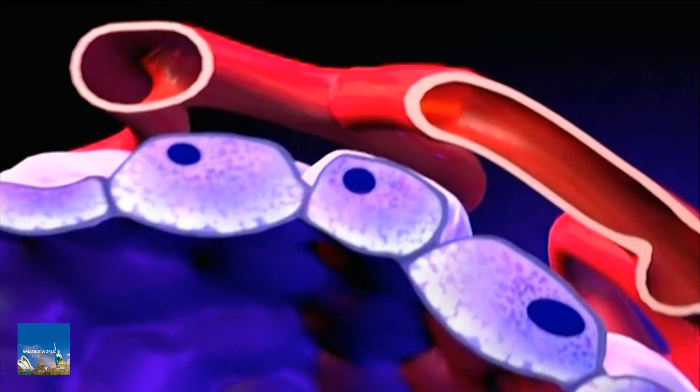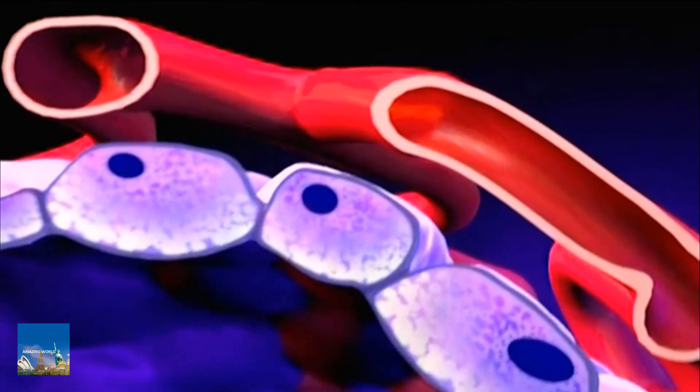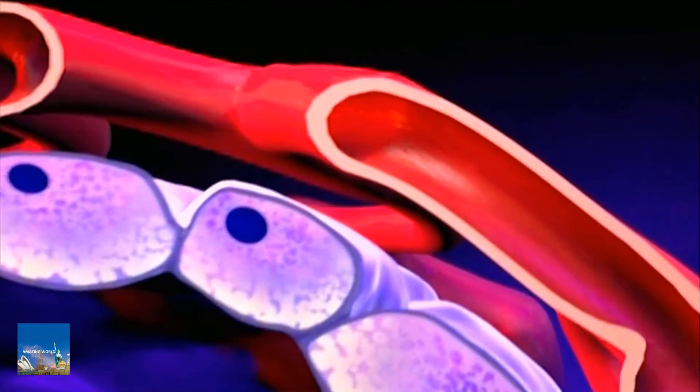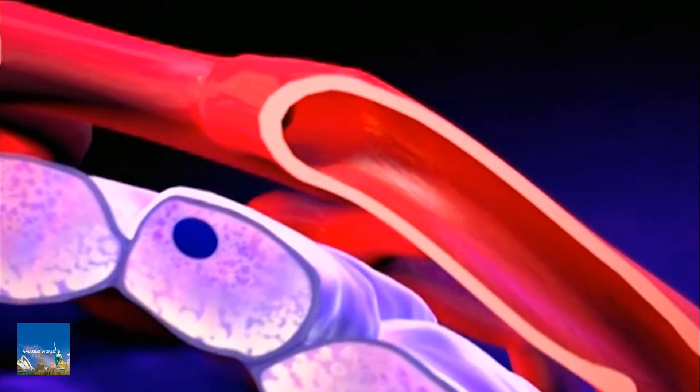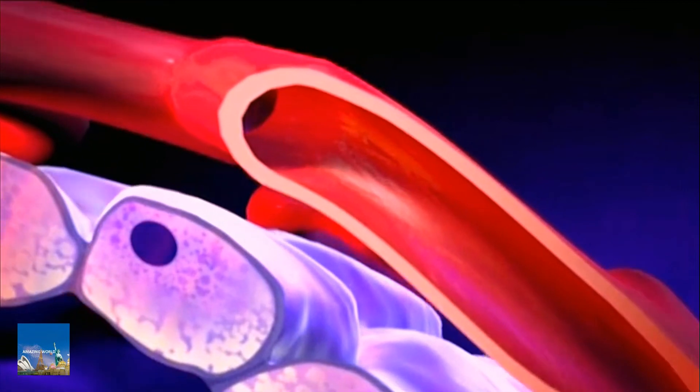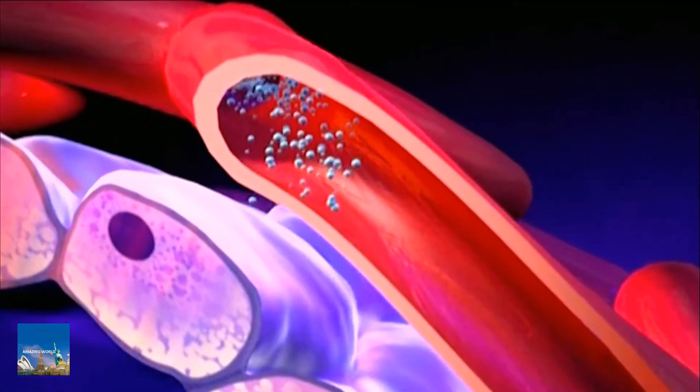Prolactin causes the alveoli to begin making milk. Oxytocin causes muscles around the alveoli to squeeze milk out through the milk ducts. When milk is released, it is called the let-down reflex.